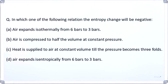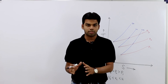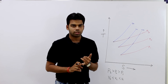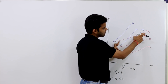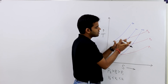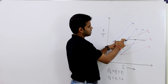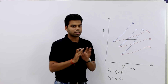Now coming to the question: in which case does entropy change become negative? The first option says air expands isothermally from 6 bar to 3 bar — temperature remains constant and pressure decreases. Since pressure decreases moving downward in the diagram, the process moves in the direction of increasing entropy. So this is not the correct answer.